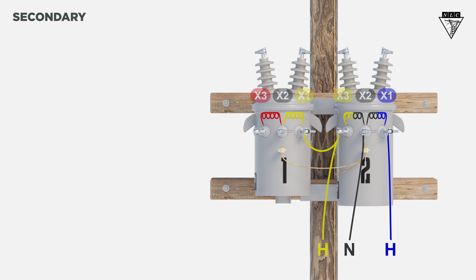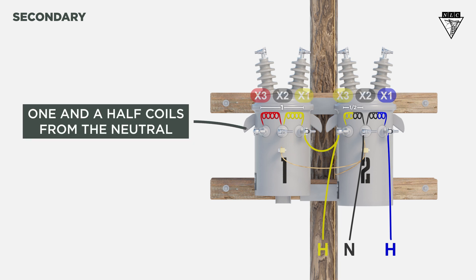Then, run a power leg one and a half coils from the neutral, which is the X3 on the first transformer. Now that it has a power leg, we'll designate it as the power transformer.